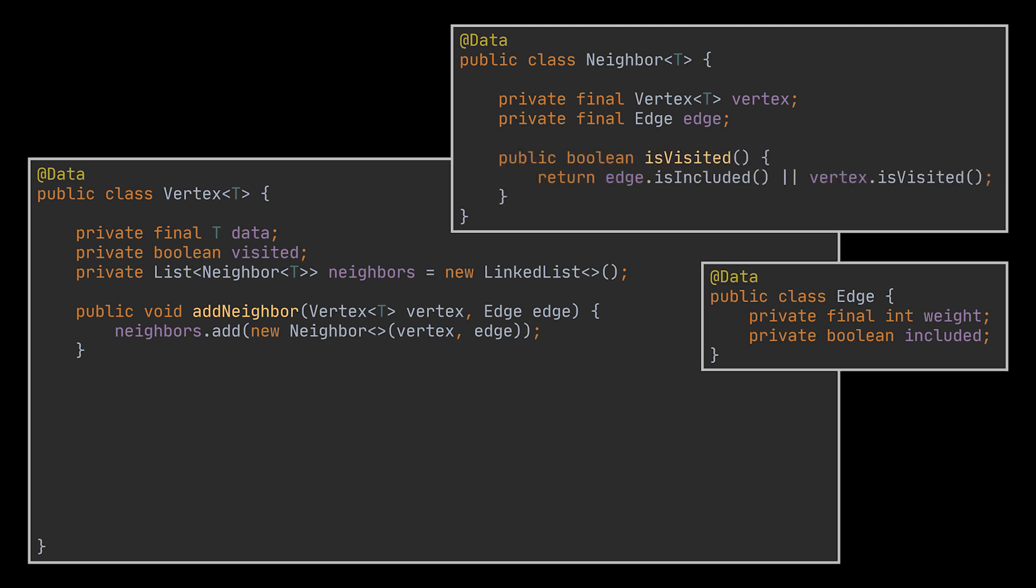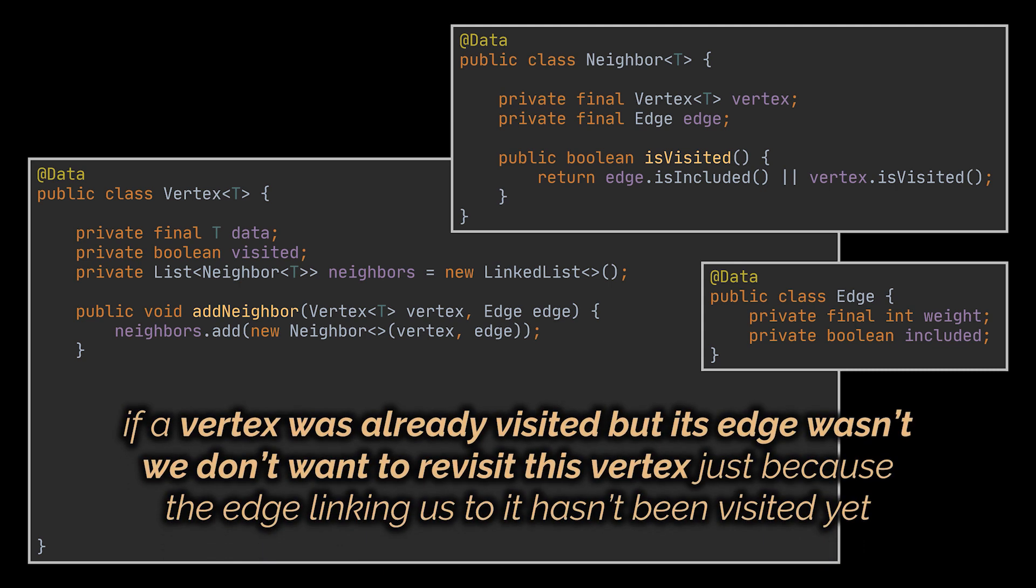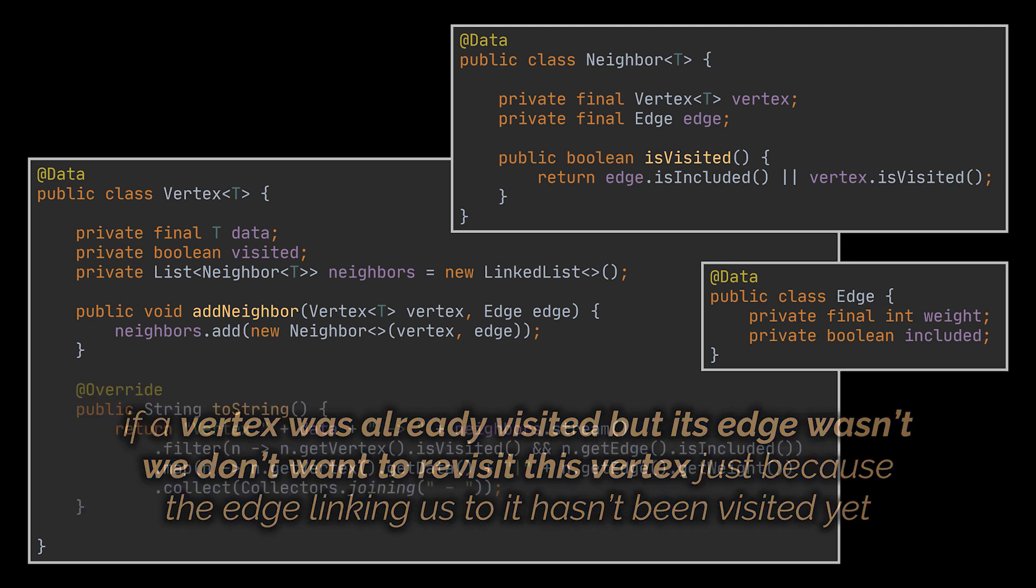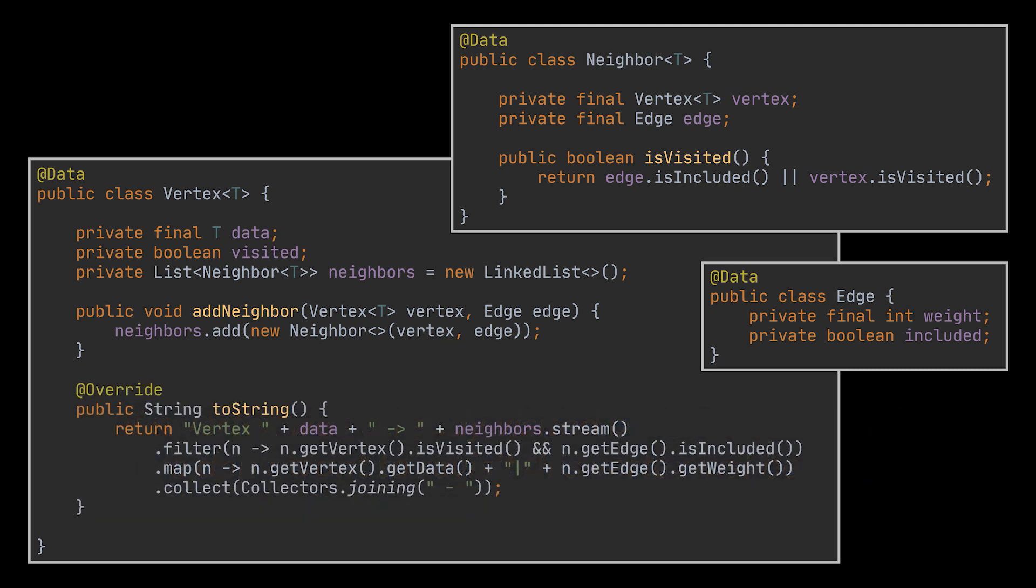Now, because the neighbor is tied to both a vertex and an edge, a neighbor is considered visited if its edge or its vertex was visited. You see, if a vertex was already visited but its edge wasn't, we don't want to revisit this vertex just because the edge linking us to it hasn't been visited yet, similarly to what happened in the third iteration of the example we previously gave. Finally, in the vertex class, I overwrote the toString method to help us later on visualize what our output, or the tree we spanned, looks like while testing our algorithm.